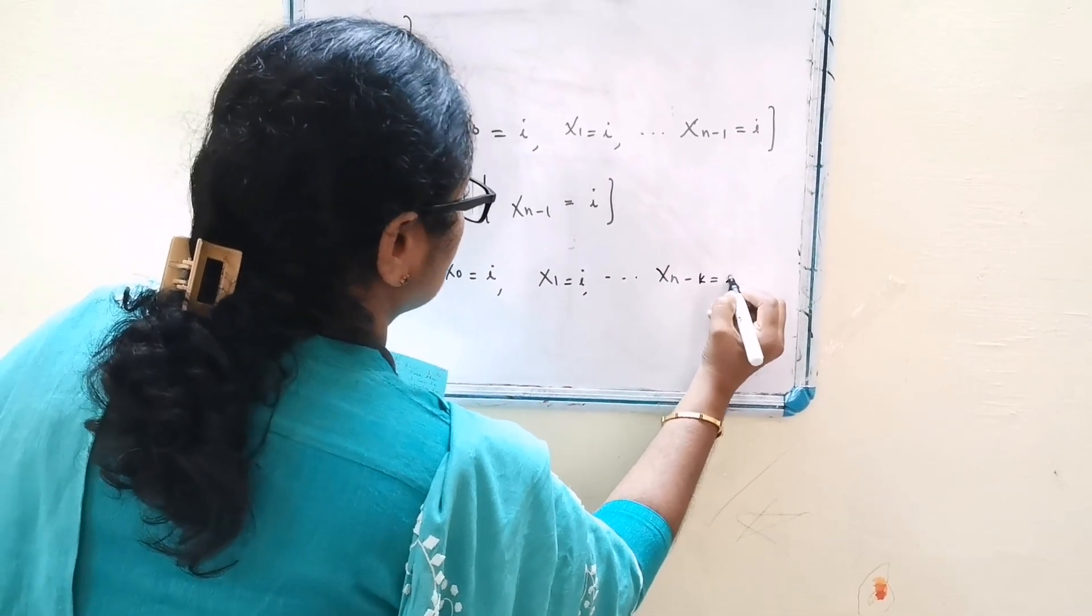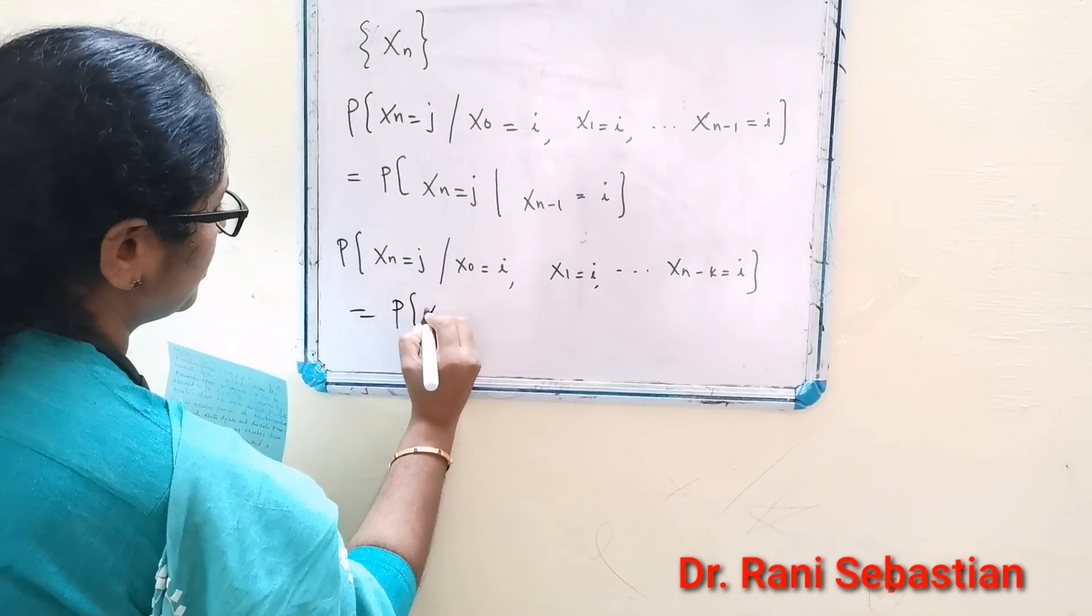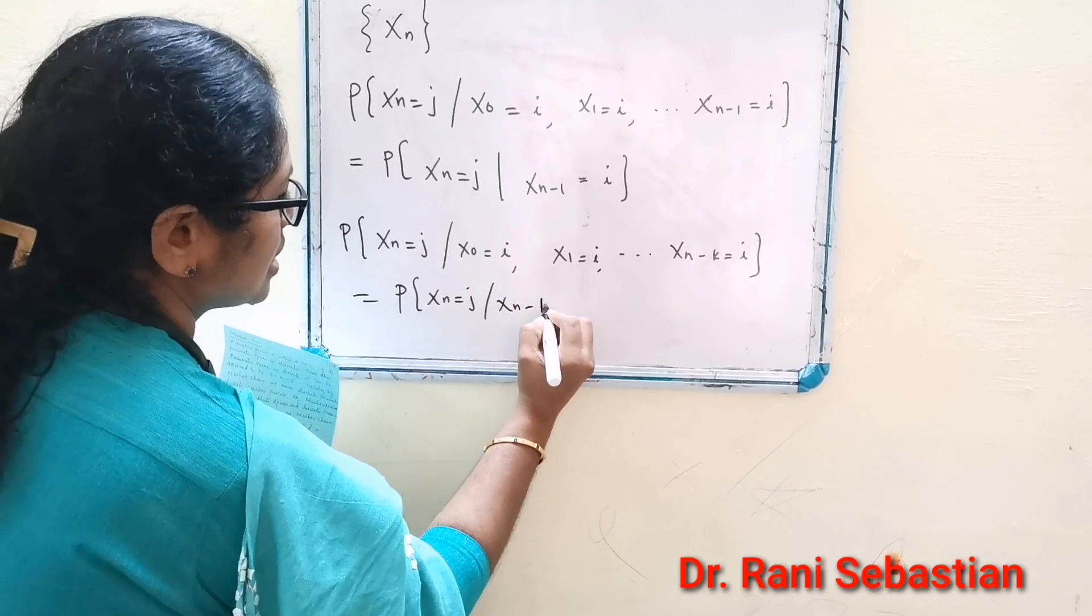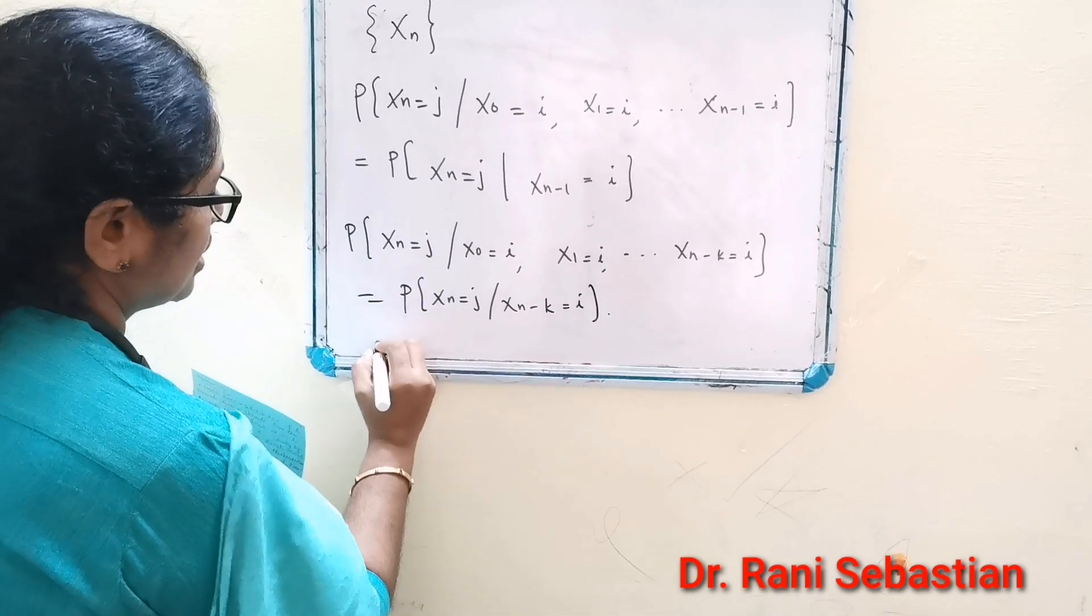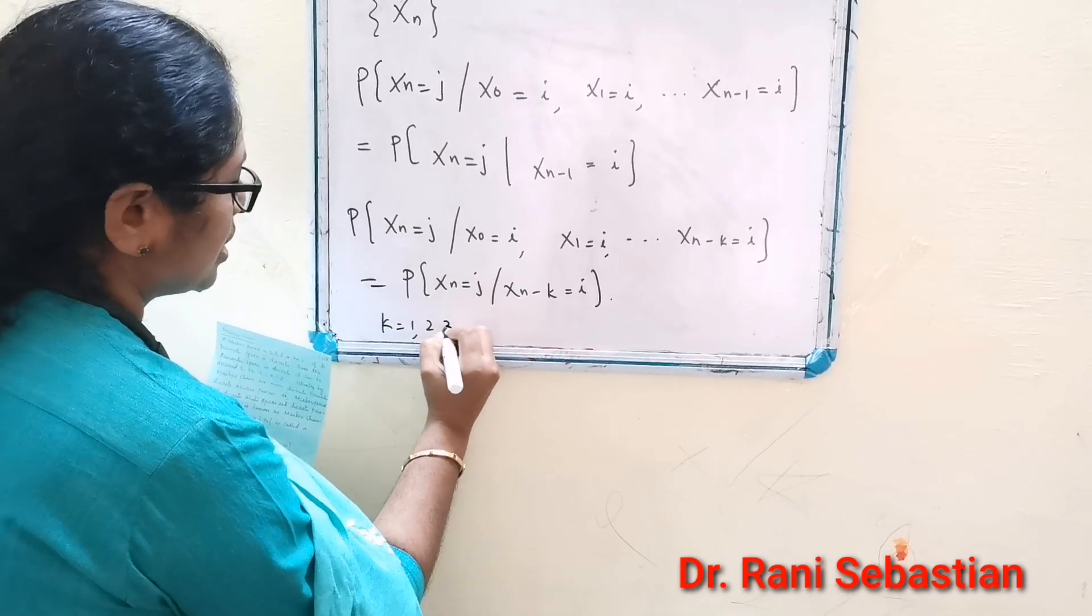This equals probability of xn equal to j given xn-k equal to i, where k is equal to 1, 2, 3, etc.